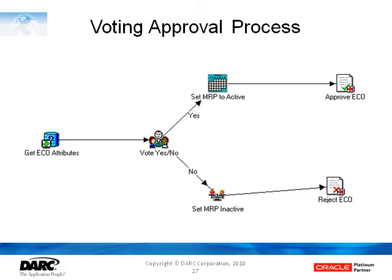The next seeded process we're going to look at is the voting approval process. This process was added sometime in the evolution of the 11i product because the standard approval process didn't have a voting method. So this is essentially the same workflow with the standard approval notification getting replaced with the vote yes/no notification.